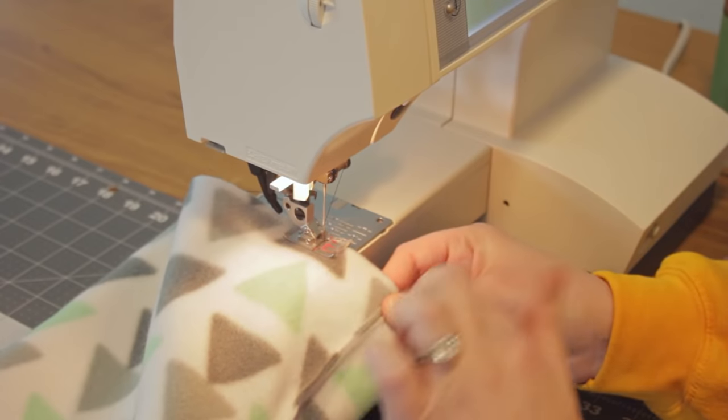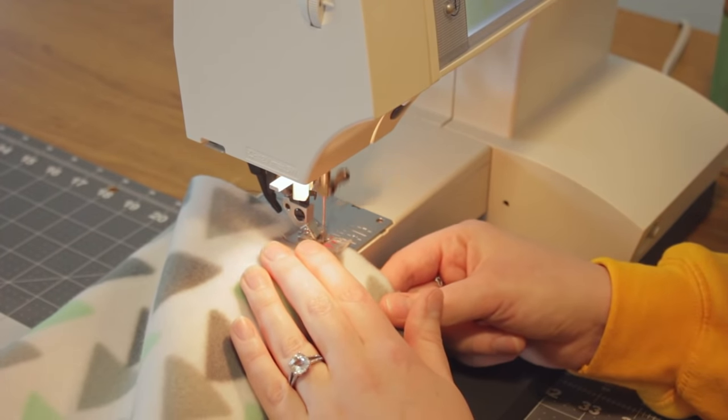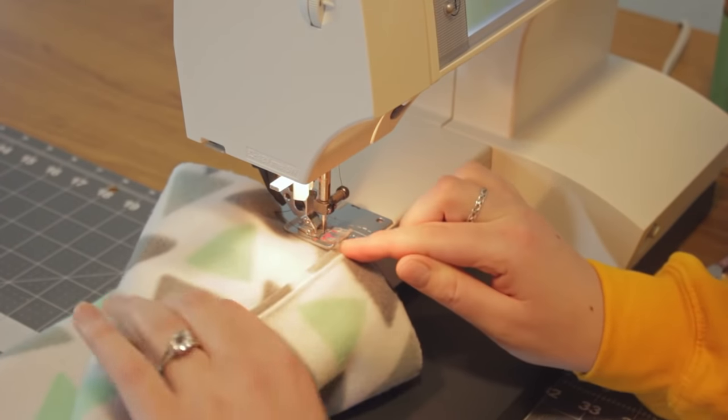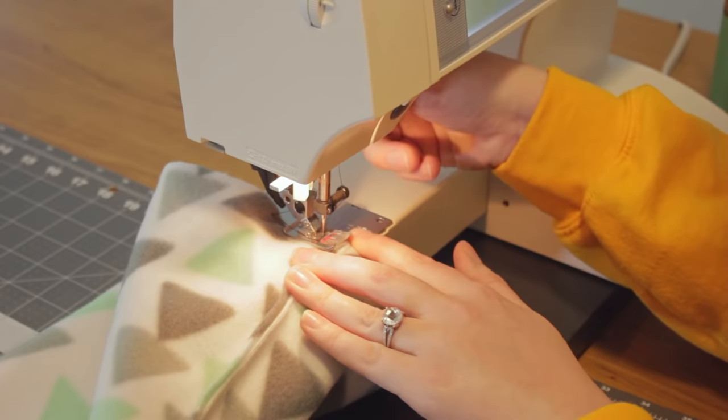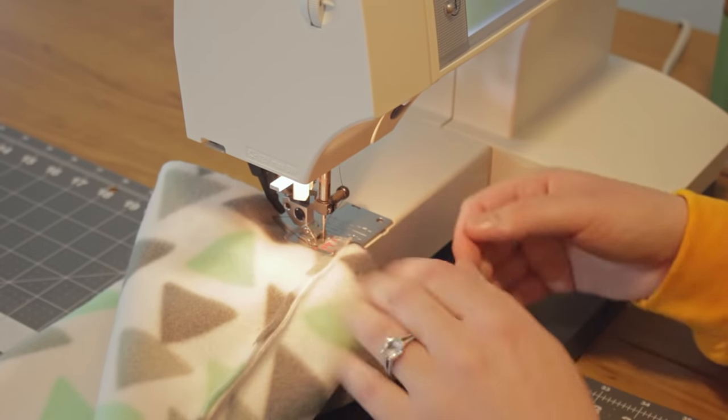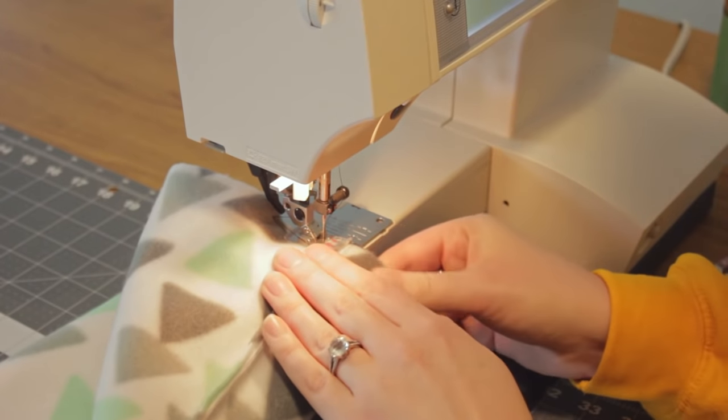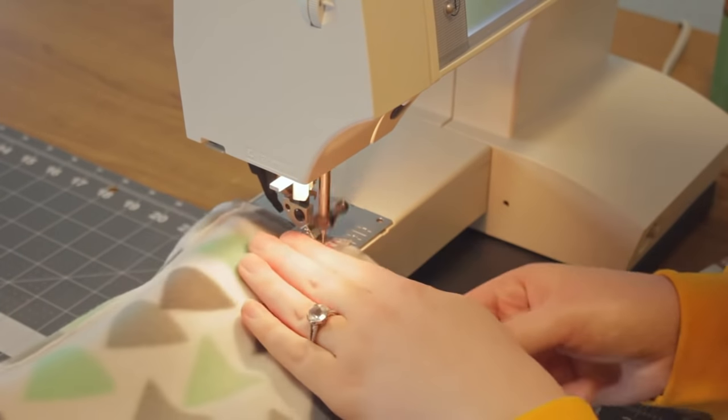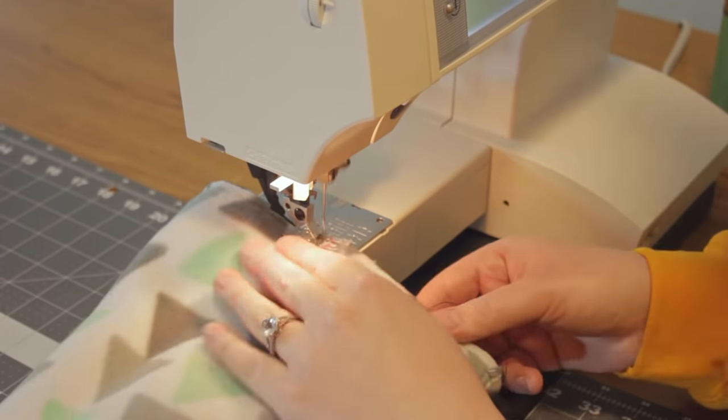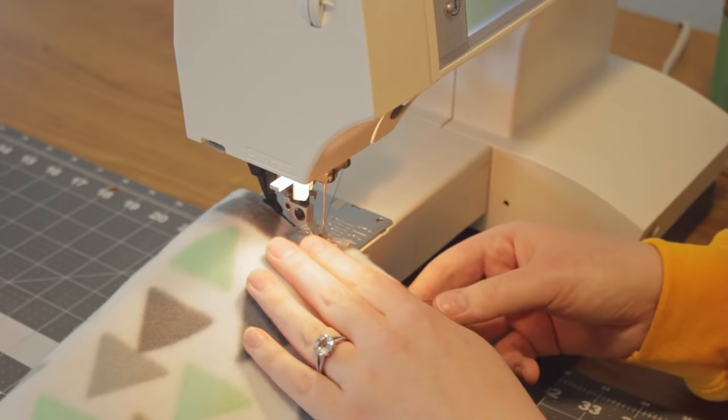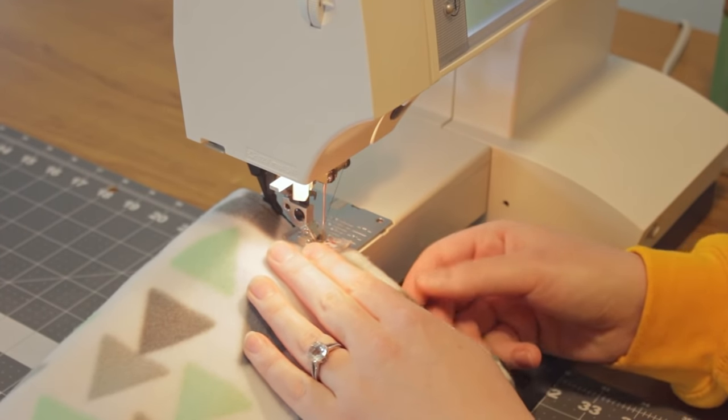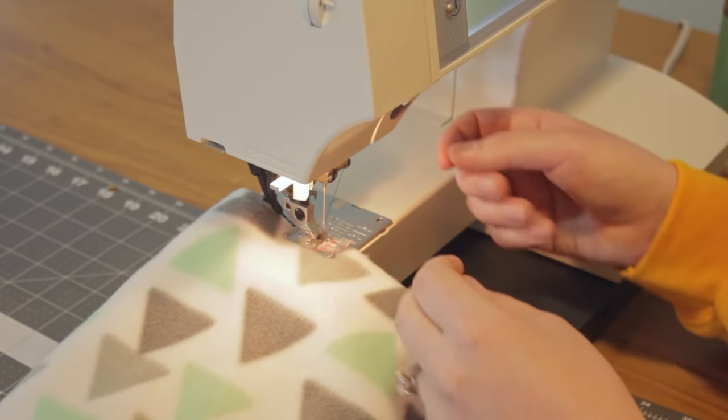Now I'm going to use a quarter inch seam allowance to sew all the way around. When I get to this seam here, I will lift my presser foot and then help it go under and then put it back down, because otherwise the seam will kind of roll outward, and then I keep going. Now I'm making sure to leave a couple of inches, and make sure you back stitch, because if you don't, when we go to turn the bag right side out, you'll rip your stitches open.